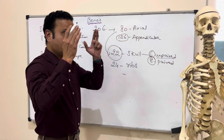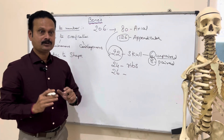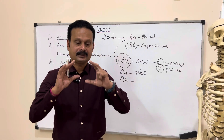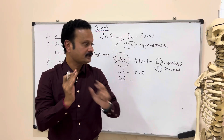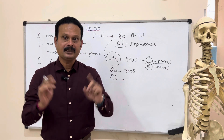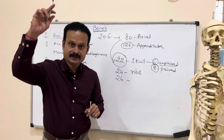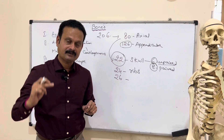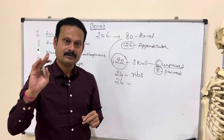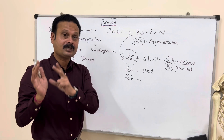We have vertebrae: number-wise it is 26. The total number of vertebrae is actually 33, but since the 5 sacral vertebrae are fused to form one single bone called the sacrum, and 4 coccygeal vertebrae are fused to form one single coccyx, each is grouped as 1. So: 7 cervical, 12 thoracic, 5 lumbar — that gives 24 — plus 1 sacrum and 1 coccyx, coming to 26.